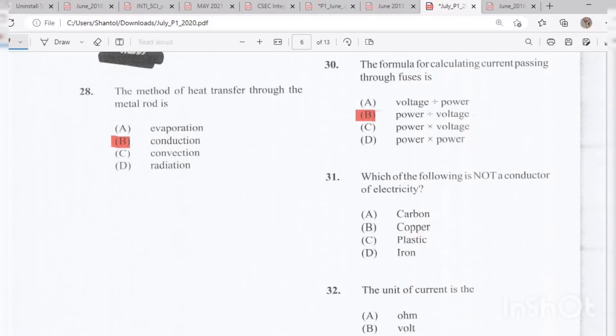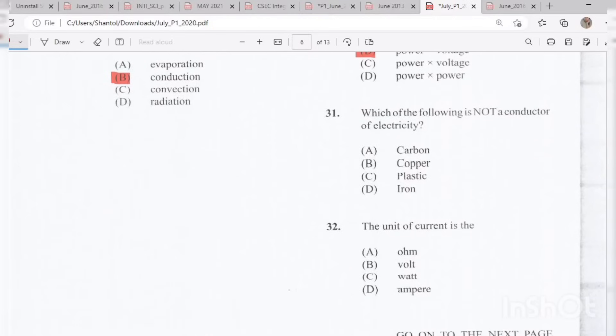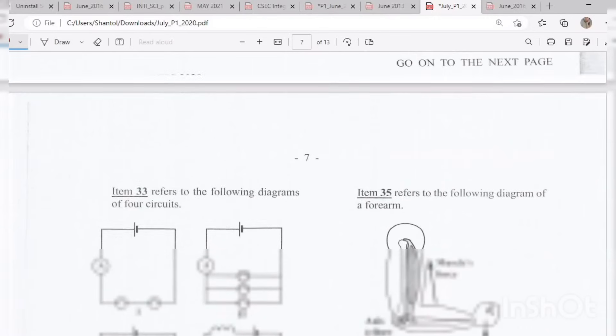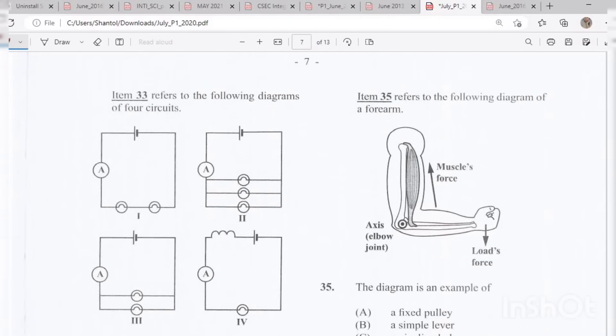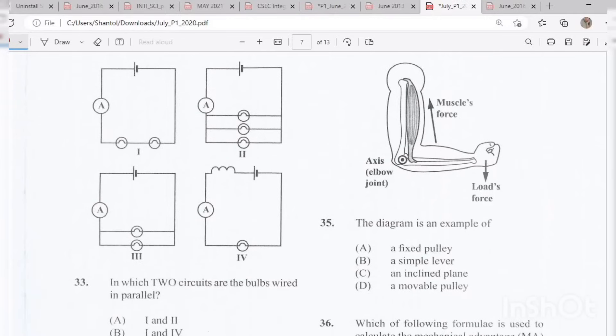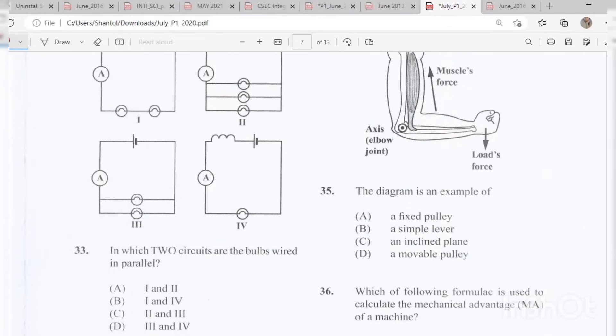Item 31: Which of the following is not a conductor of electricity? This is easy. The answer is plastic. Question 32: The unit of current is D, ampere. Item 33 refers to the following diagrams of four circuits. The question is in which two circuits are the bulbs wired in parallel? The answer is C, diagrams 2 and 3.